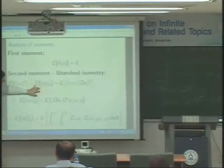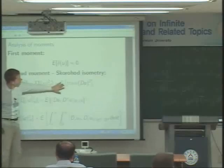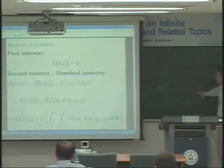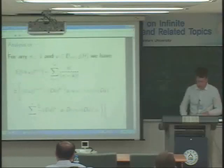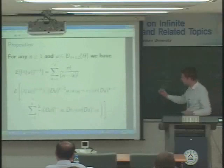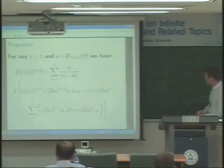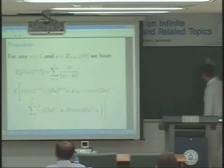The expectation coincides with this constant, and we will have the correct second moment of the Gaussian law when the trace term is zero. At least for k equal to that, we get this condition. What we need to do is go beyond the second moment. For this, we can use a moment identity, which extends the Skorokhod isometry. It is proved by induction.